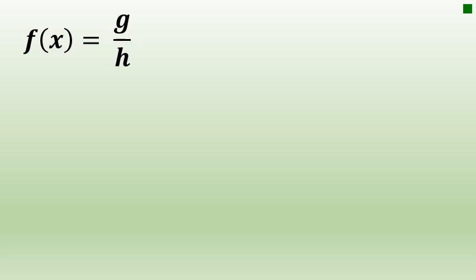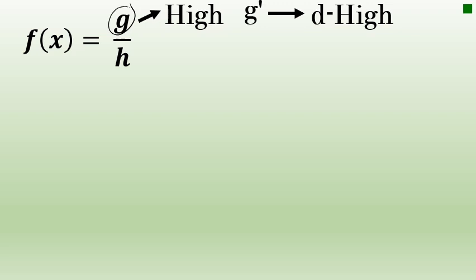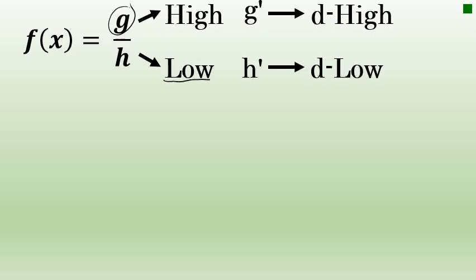In this rhyming shortcut, I'm going to describe the numerator as the high part of the fraction, and I'll call the derivative of the numerator d high. I'm going to refer to the denominator of the fraction as the low part, and the derivative of the denominator as d low.